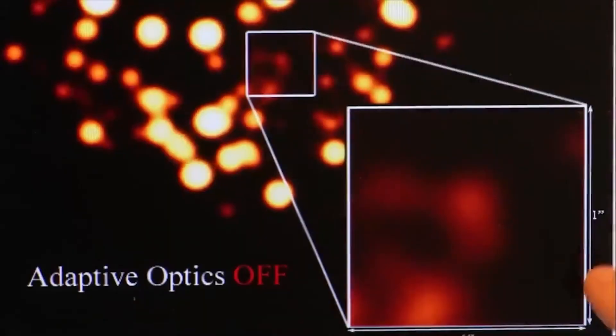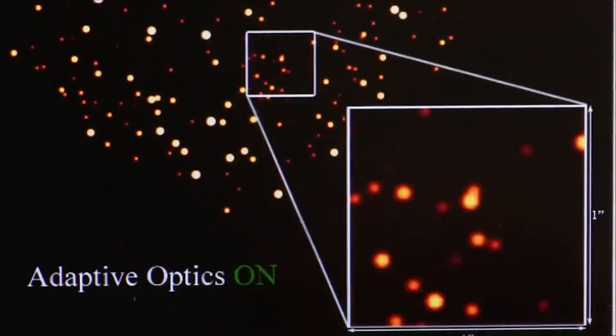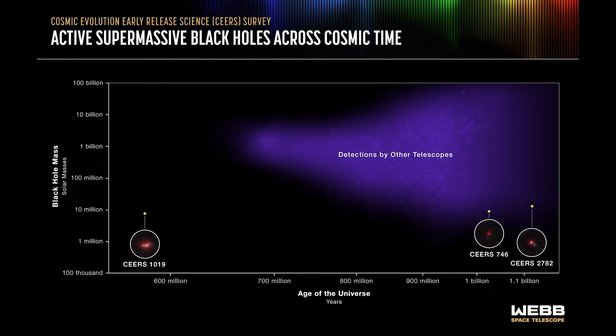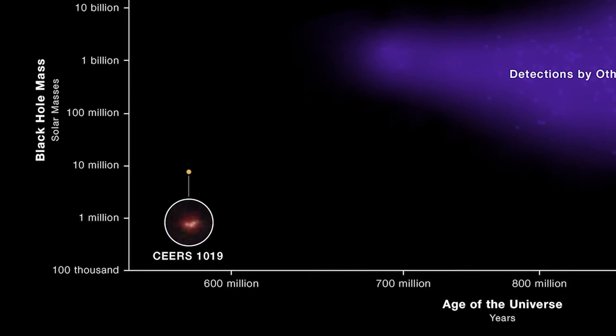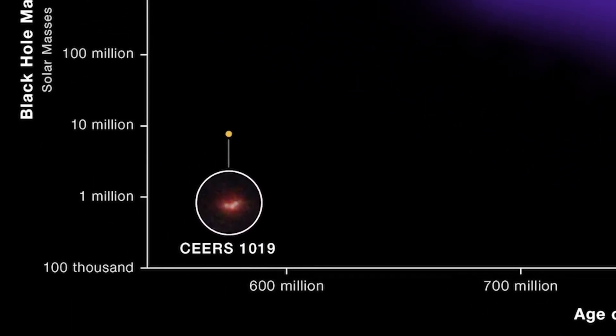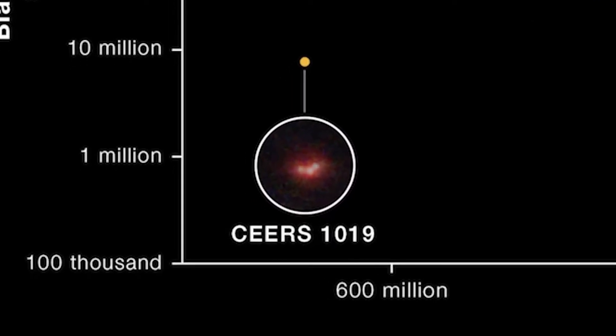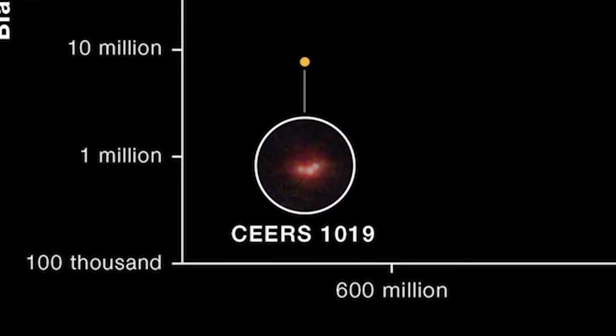The researchers looked at the galaxy that hosts this active supermassive black hole as part of the Kashmi Evolution Early Release Science Program, dubbed CEERS 1019. The galaxy looks just as it did when the 13.8 billion year old universe was only about 570 million years old.